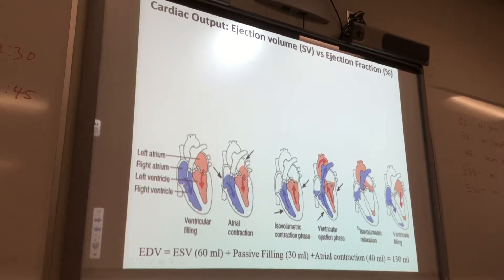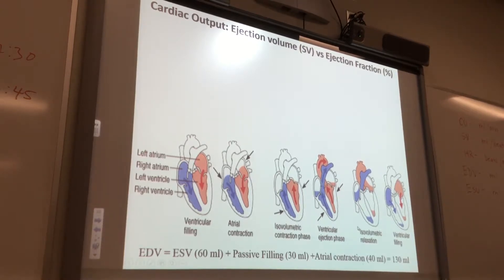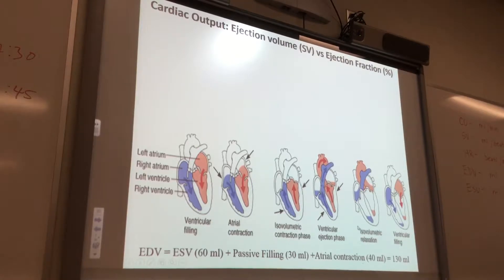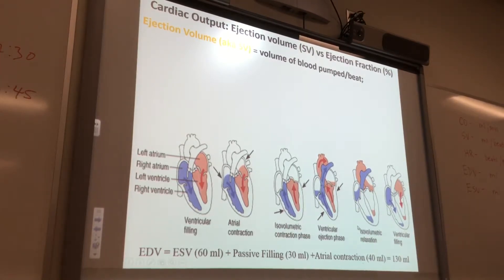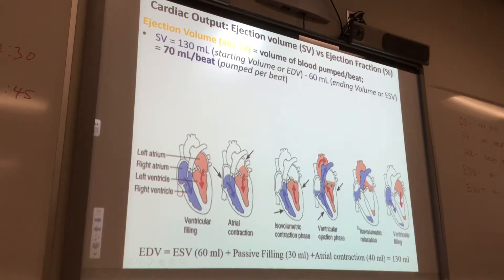So the stroke volume is sometimes called the ejection volume. They call it the ejection volume because that's the volume of blood that's ejected in one beat. This is a really important clinical measurement associated with ejection volume or stroke volume — it's called the ejection fraction. So stroke volume, or ejection volume, is the volume of blood pumped in one beat.